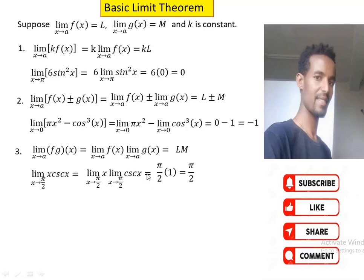Note that csc(x) equals 1 over sin(x). Since sin(π/2) = 1, the limit of csc(x) as x approaches π/2 equals 1 over 1 = 1. Therefore, the limit of x as x approaches π/2 times the limit of csc(x) as x approaches π/2 equals π/2 times 1, which is π/2.